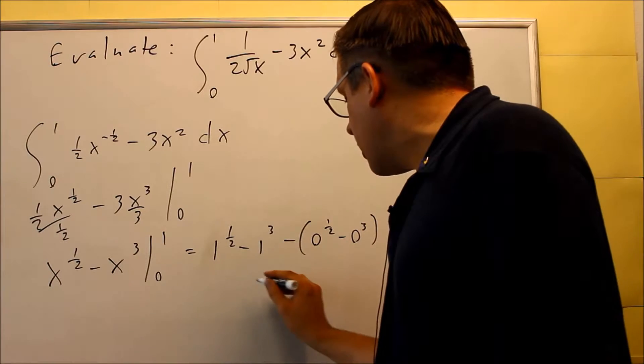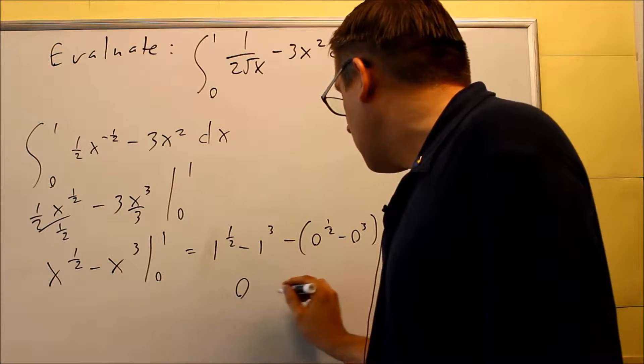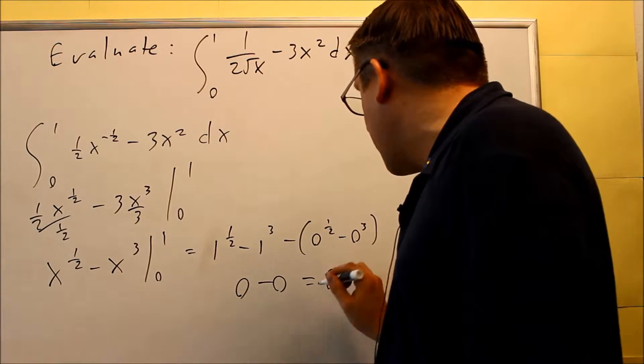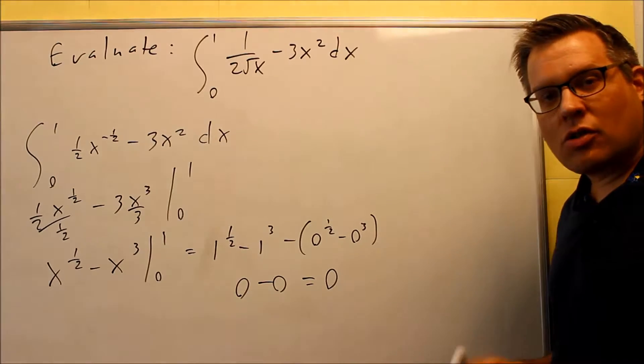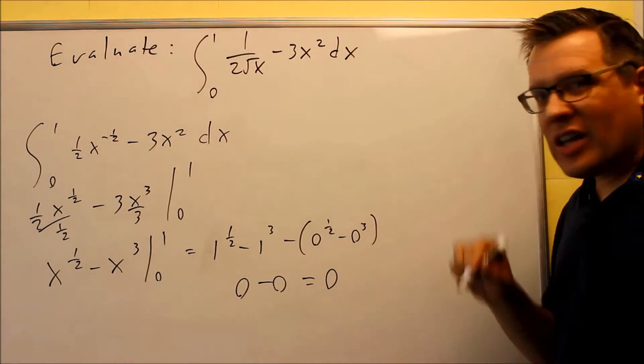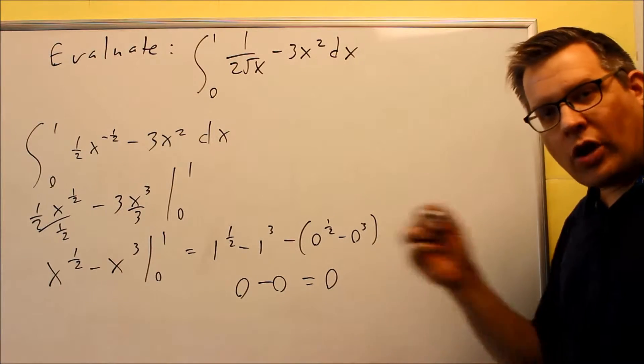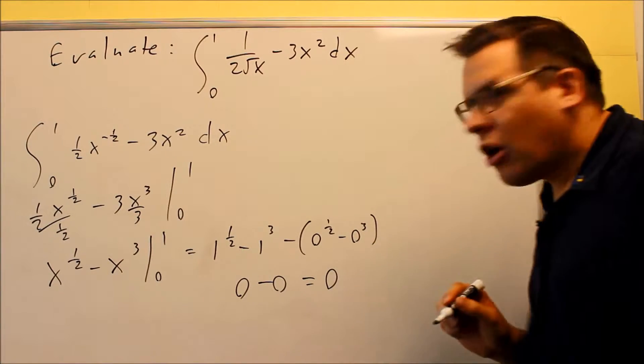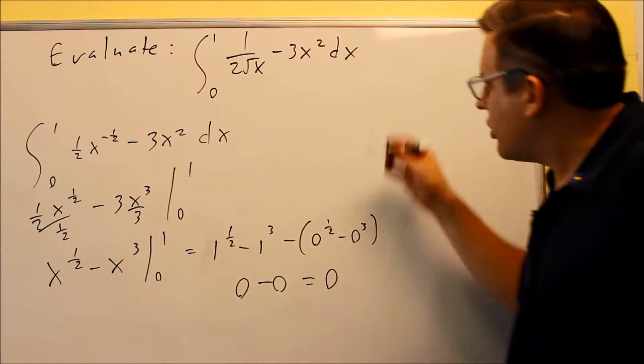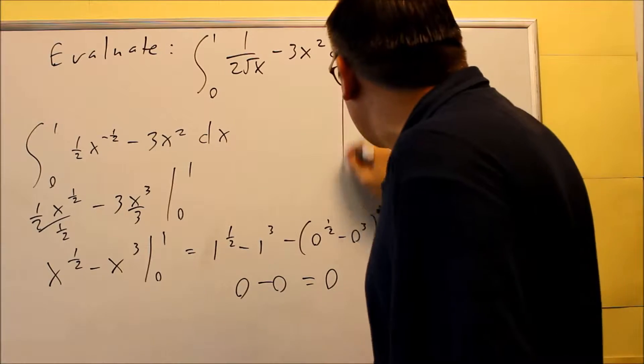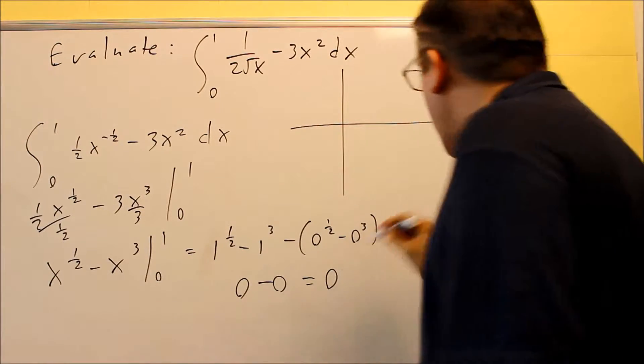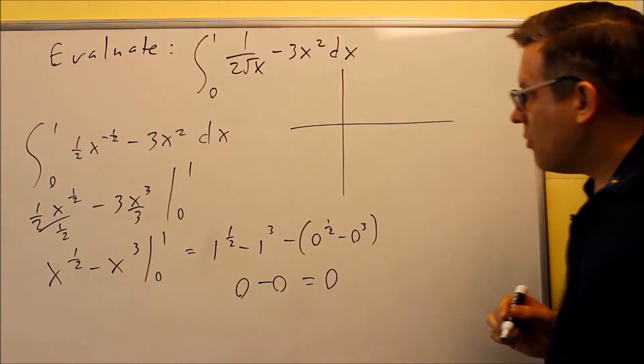So I get 1 minus 1 here, which is 0, and I get minus 0, which means I get 0 as my answer. So the question is, if I'm finding the area underneath a curve, wouldn't I actually just get an actual number, always have an area? Let's take a look at the graph on this one because you'll see why it cancels out and gives you a 0.